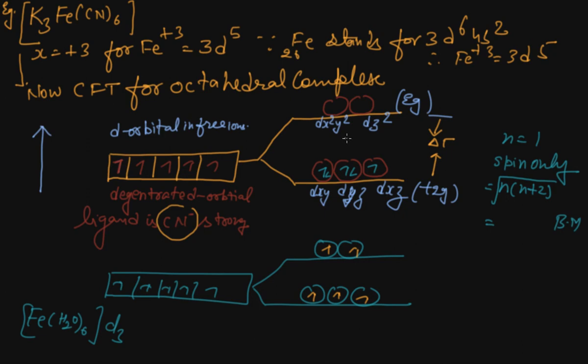The dx²-y² and dz² orbitals which point towards the axes along the direction of the ligands will experience more repulsion and will be raised in energy. The dxy, dyz, dxz orbitals which are directed between the axes will be lowered in energy relative to the average energy in the spherical crystal field. Thus the degeneracy of d orbitals